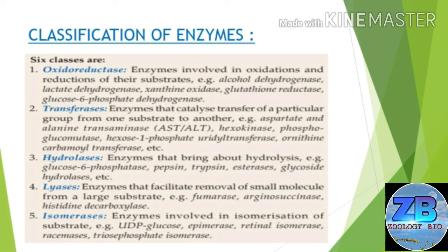The second one is transferases — enzymes that catalyze the transfer of a particular group from one substrate to another. For example, aspartate and alanine transaminase (AST/ALT), hexokinase, phosphoglucomutase, hexose-1-phosphate uridylyltransferase, ornithine carbamoyltransferase, etc.